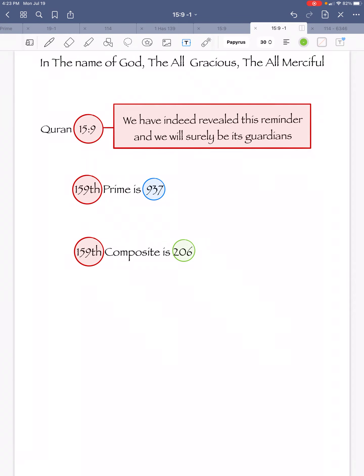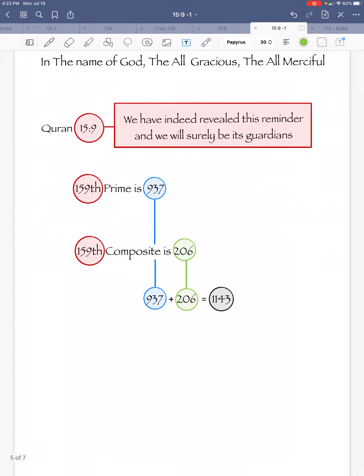So far, 159 generated two sets of numbers, 937 and 206. Let's add those two numbers together, and once we do, we get 1143.